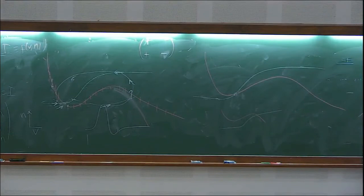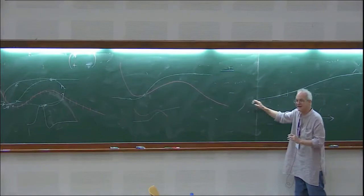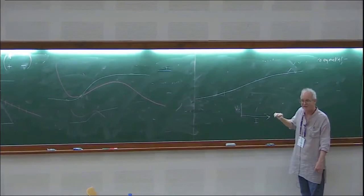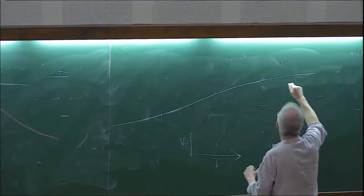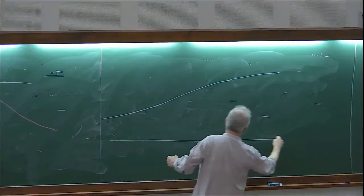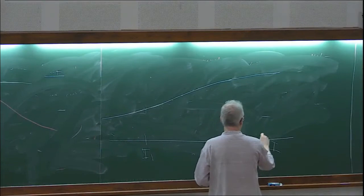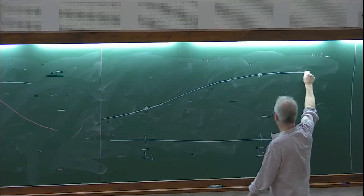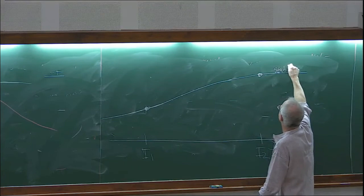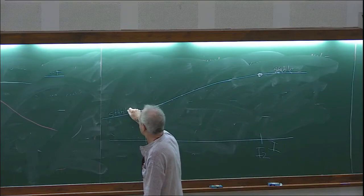For I very negative, the v-nullcline is in the region where the slope is negative, so it's stable. For I very large and positive, we're also in a negative-slope region and it's stable again. It turns out that for intermediate values of I between I_1 and I_2, the equilibrium is unstable, and outside that range it's stable. I'll draw the unstable part as a dashed line.